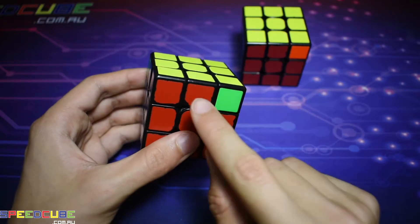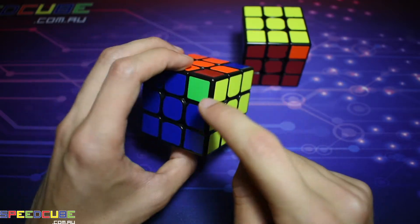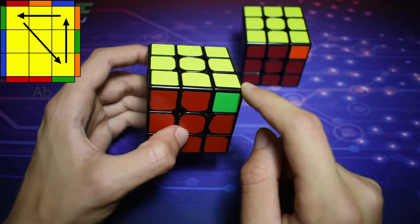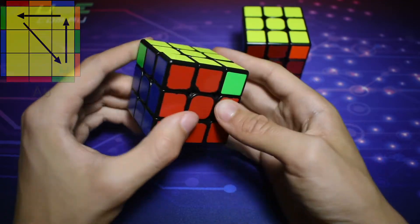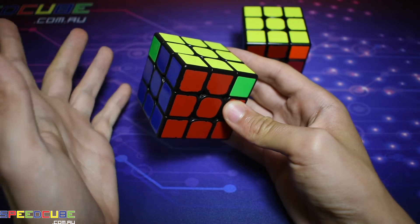So how you recognize this one is all of the edges are solved and it's actually a three cycle of corners like this. And you'll notice that there's a 2x2 block over here.